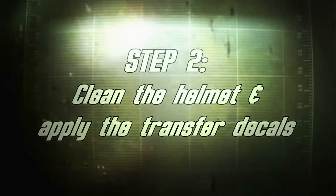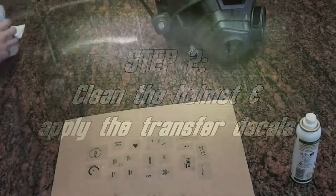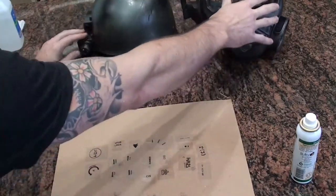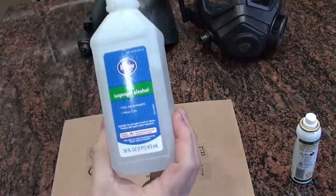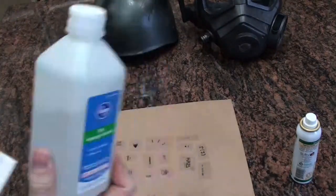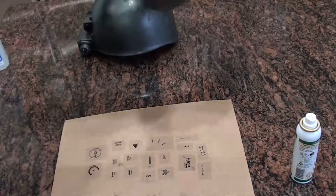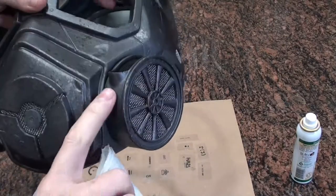Next step we're going to prepare the helmet. We're going to use some rubbing alcohol to clean off the spots where we're applying the decals. That's just going to help the adhesive to stick better to the helmet so that there's not any loose paint or dirt or anything like that, oils on the surface of the helmet.